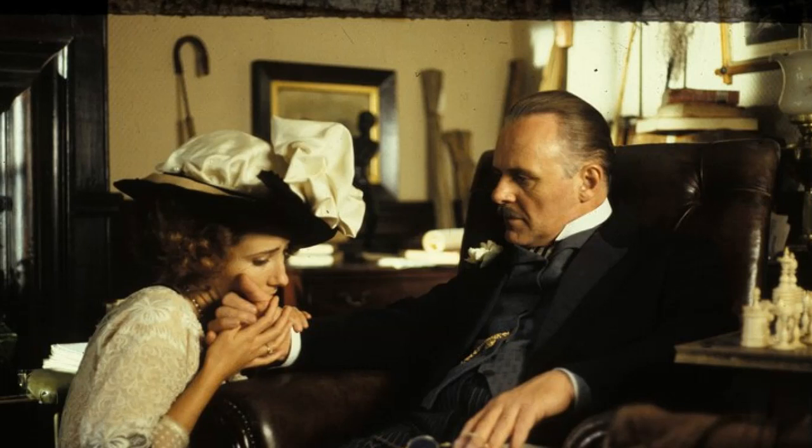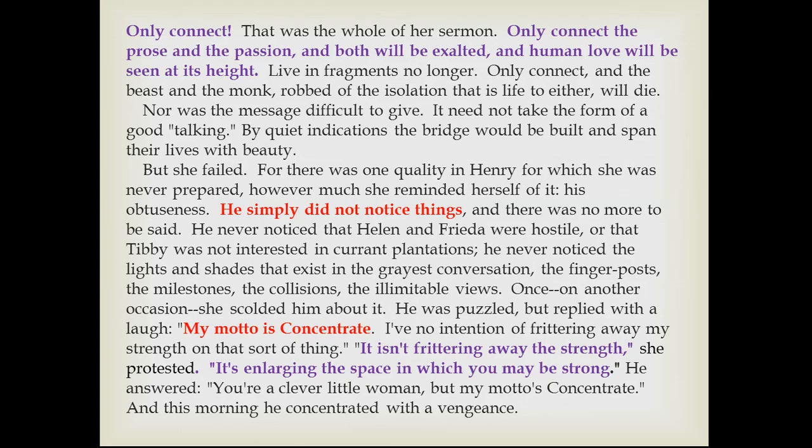Margaret turns out to be mistaken about the idea that she can simply change Henry. She finds it hard to get him to connect. This is because, in conducting a life that has involved running an exploitative colonial firm — the West African Rubber Company — and taking advantage of vulnerable 16-year-old girls such as Jackie, Henry Wilcox has developed a different motto: 'concentrate.' What he presumably means by this is that he will focus on his narrow self-interest and therefore not notice anything which shows up the inconsistencies or hypocrisy of his actions. In a novel whose epigraph is 'only connect,' it turns out that very few people are actually making real connections.